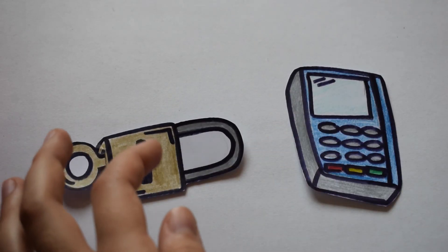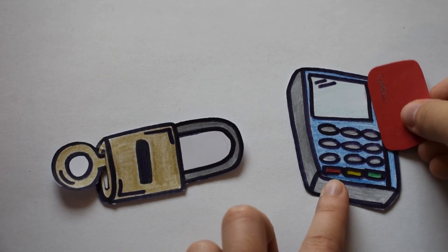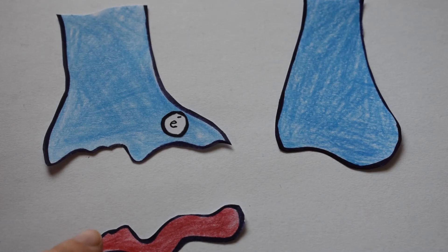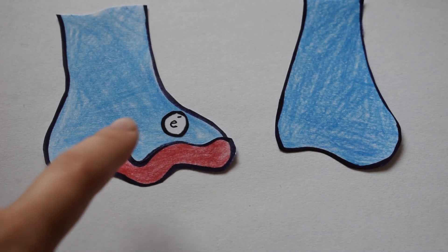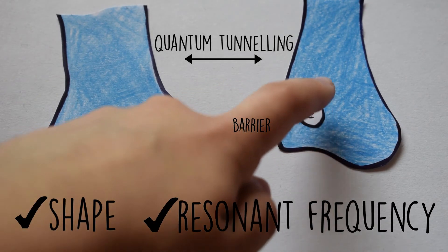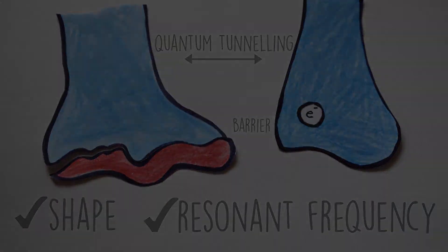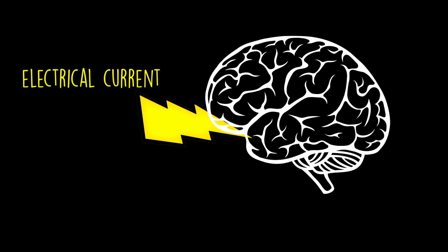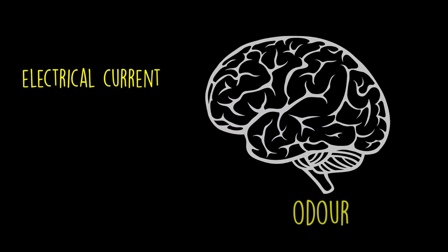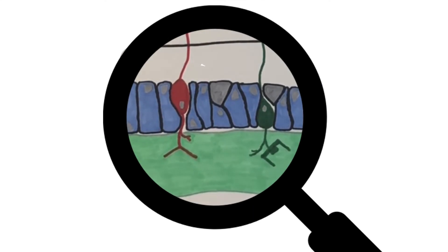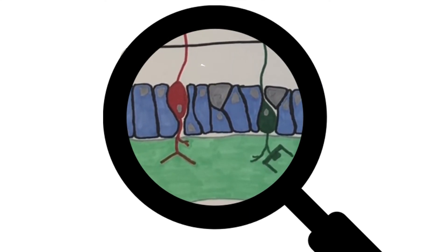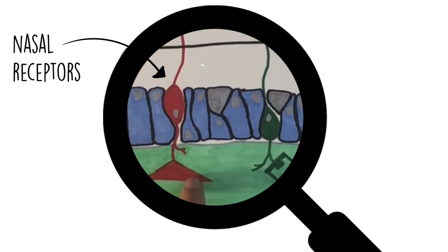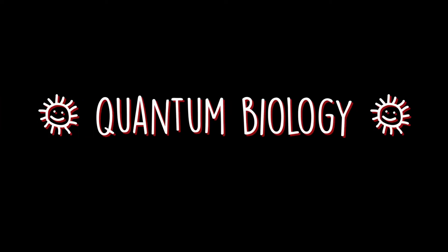That is, both a lock and key and swipe card system. It might be that the volatile molecules reaching our nose are first checked for their shape, and then for their resonance vibration through quantum tunneling within the receptors. Both mechanisms trigger the firing of an electrical current sent to the brain via the nerves, which induces the odor sensation. Further insight would require the ability to directly observe the nasal receptors in action — quantum biologists have a very exciting future ahead of them. Who said quantum physics was too abstract to intervene in our daily lives?